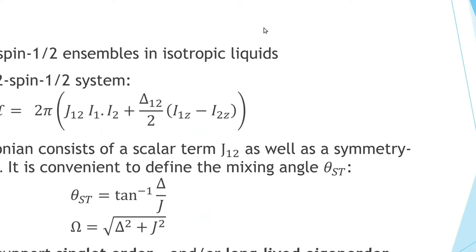Going over some basic properties: you have spin-half ensembles in isotropic liquids. In the most basic form, you have a J-coupling — a scalar term coupling two spins — and you have a symmetry-breaking element, typically a chemical shift difference, which introduces singlet-triplet mixing. It's very convenient to define a mixing angle: arctan of the chemical shift difference over J. These systems support a singlet order and/or long-lived eigenorder, and I'm going to be talking about what long-lived eigenorder actually means.